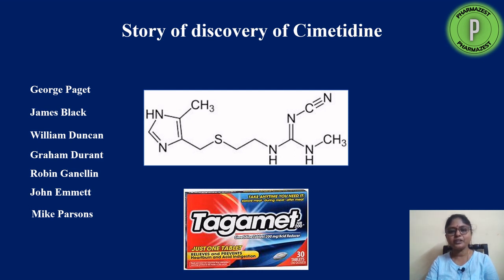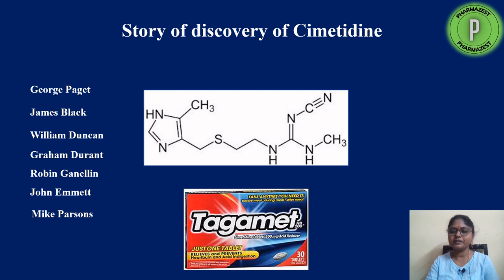It is an interesting story in rational drug design. Before the discovery of Cimetidine, drug discovery was based on traditional medicine or serendipity. New drugs were identified based on traditional drugs used in family scenarios — those active principles were isolated, studied, optimized, and used as medicines. Or it was a chance discovery like penicillin. But after the discovery of Cimetidine, it led to the foundation of the present rational drug discovery path — a step-by-step approach starting from identification of a molecular target through lead optimization and study.